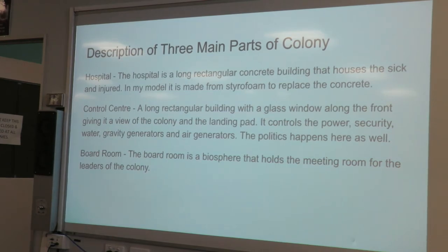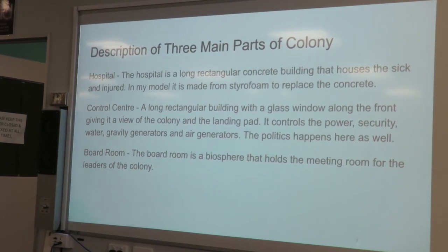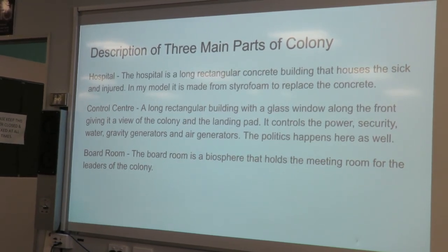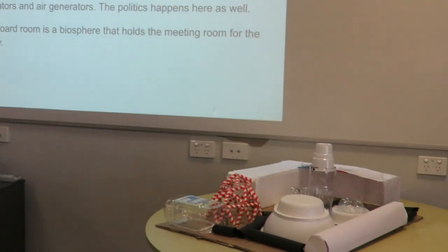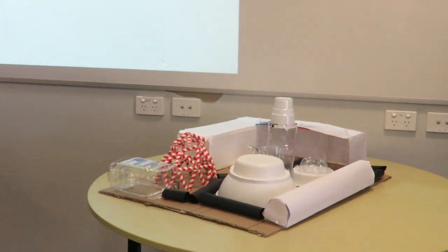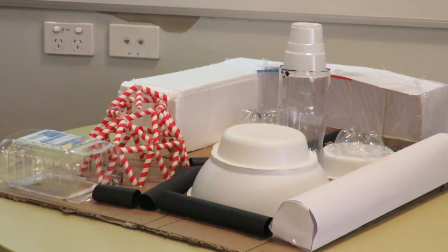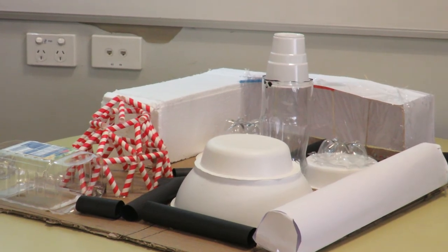A description of the three main parts of the colony. The hospital is a long rectangular concrete building that houses the sick and injured. In the model it is made from styrofoam to represent concrete. The control centre is a long rectangular building with a glass window along the front, giving it a view of the colony and the landing path. It controls power, security, water, gravity, and air. The politics happen here as well. The boardroom is a biosphere that holds the meeting room for the leaders of the colony.